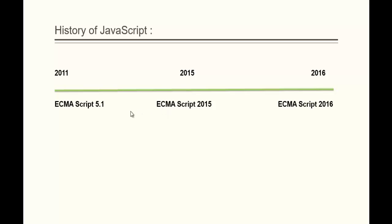You can observe the change here — the earlier version is 5.1, but here the version is 2015. That is because the ECMA standard body decided to present the version of ECMAScript by the year it was released. So they named it ECMAScript 2015, and it was released in the year 2015. The current version is ECMAScript 2016, also released in 2016.